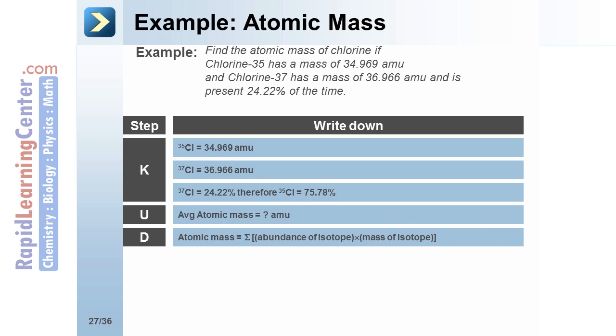Step D: Definition. Atomic mass equals the sum of the abundance times the mass for each isotope.